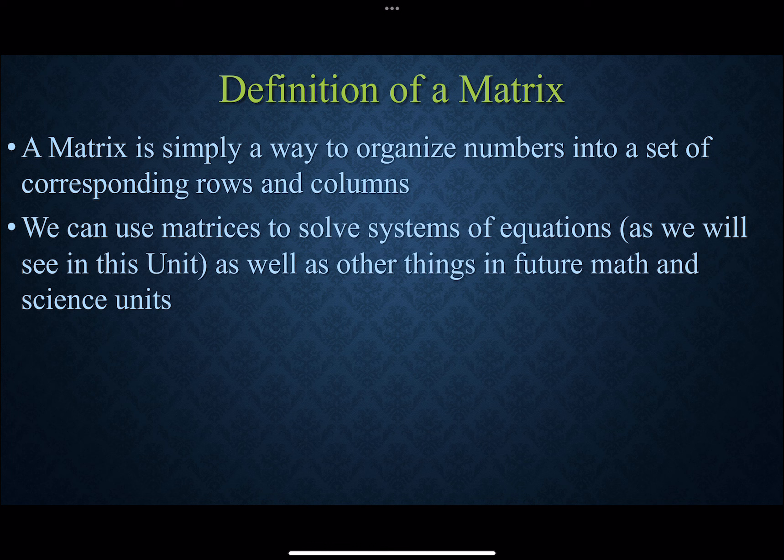A matrix is simply a way of organizing numbers into a set of corresponding rows and columns. So for example, something like this right here is a matrix. There's just a bunch of numbers assembled in rows and columns.